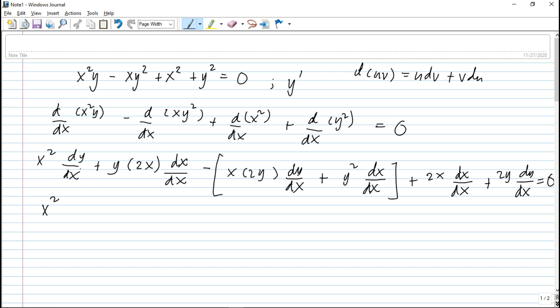Then, we simplify this, so x squared dy over dx is y prime. Plus, this is 2xy, dx over dx, so times 1. This is minus x, 2xy, y prime. Minus, you distribute this negative, so that is y squared. Plus, 2x here,